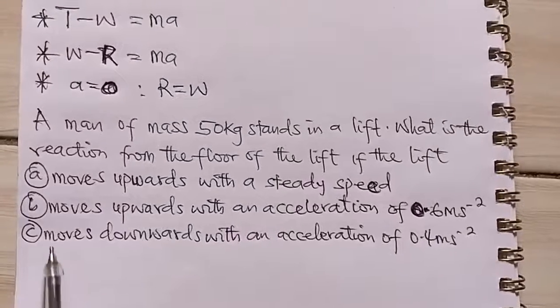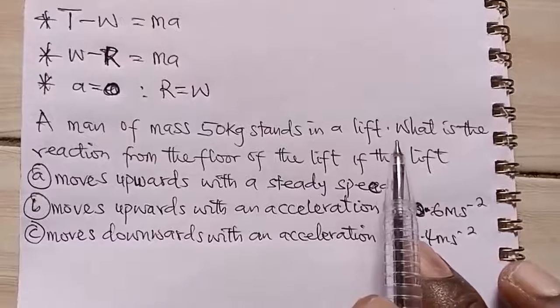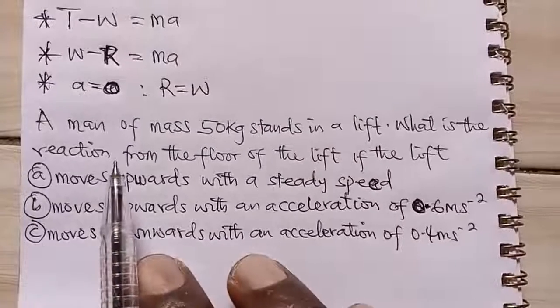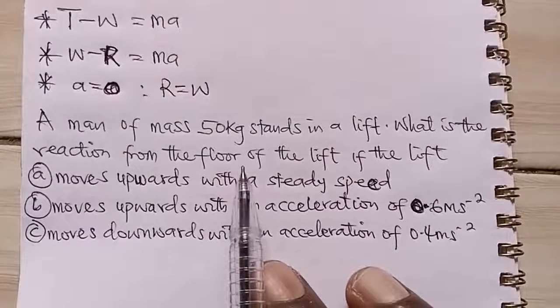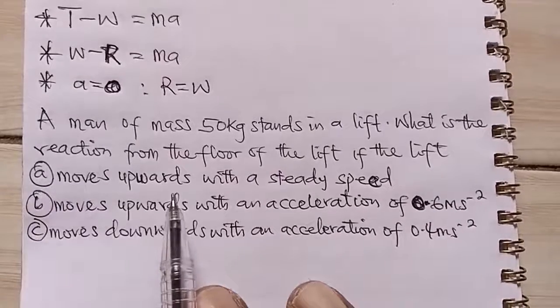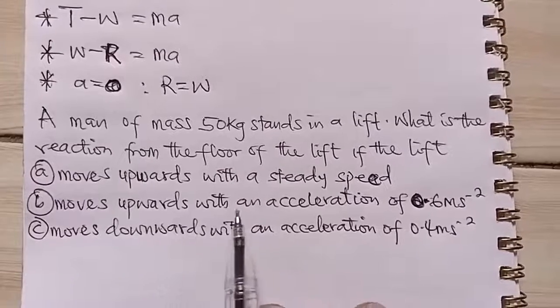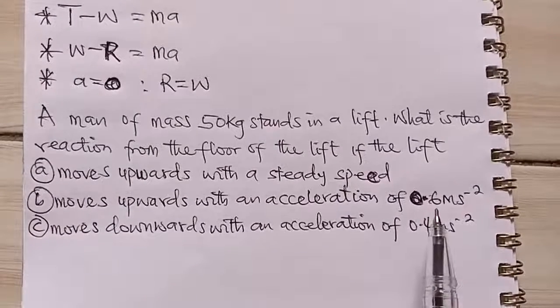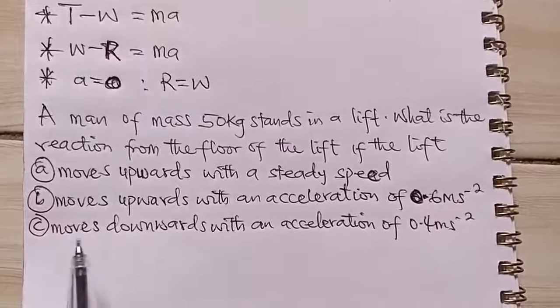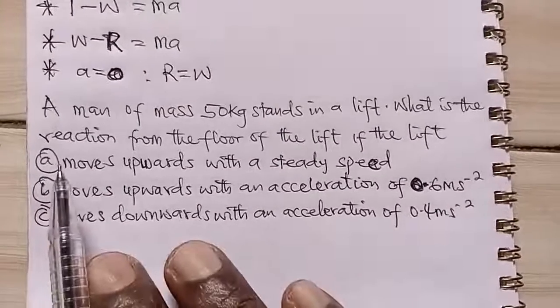For example, this question says, a man of mass 50 kg stands in a lift. What is the reaction from the floor of the lift? If the lift, a moves upward with a steady speed, b moves upwards with an acceleration of 0.6 meters per second squared, c moves downward with an acceleration of 0.4. Now let's start with the first one.